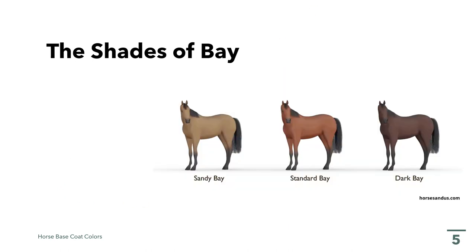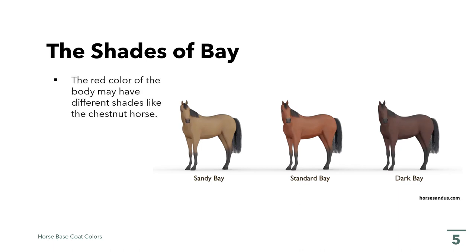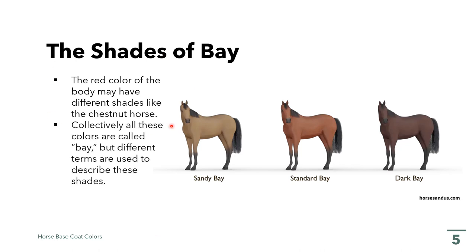The shades of the bay are usually confined to the body of the horse. The red color of the body may have different shades, like chestnut horses. Collectively, all these colors are called bay, but different terms are used to describe these shades. For example, we have the sandy bay, the standard bay, and the dark bay. In this presentation, we are also going to consider and talk about the different shades of bay aside from these three general terminologies.